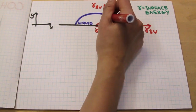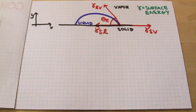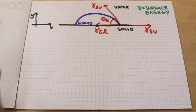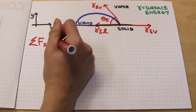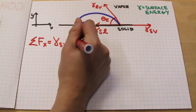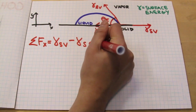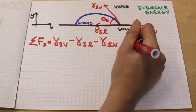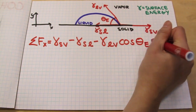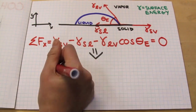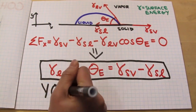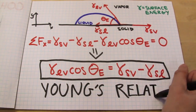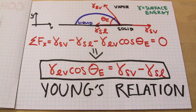If we call this angle the equilibrium contact angle, we can do a force balance on the line of contact with the surface. We want to balance the forces in the x direction. We have the surface energy between solid and vapor, the surface energy between solid and liquid in the opposite direction, and the x component of the surface energy between liquid and vapor. Rearranging gives Young's relation, which shows that the contact angle a droplet makes with the surface is related to all of these surface energies.